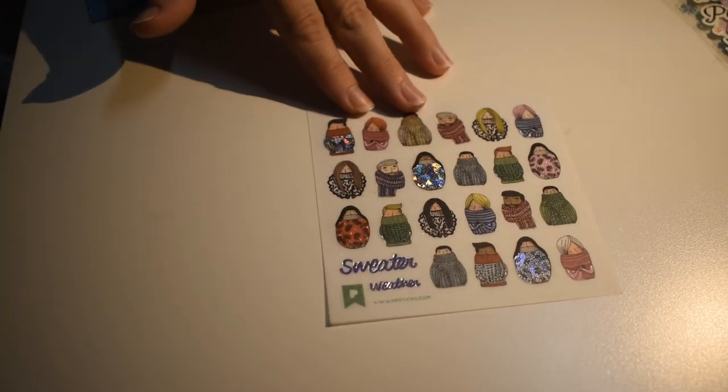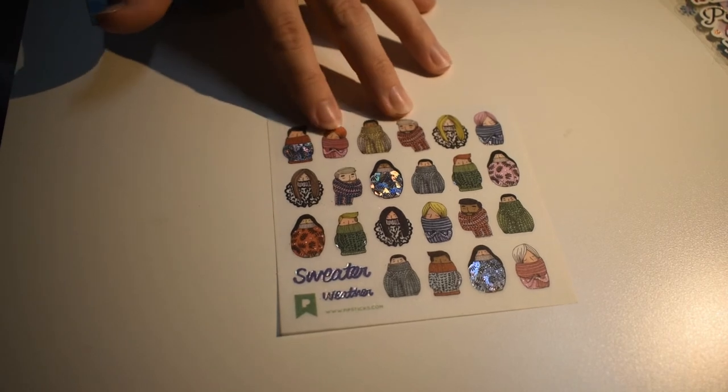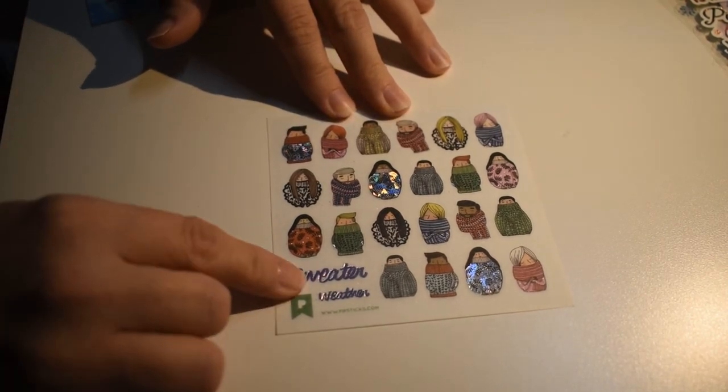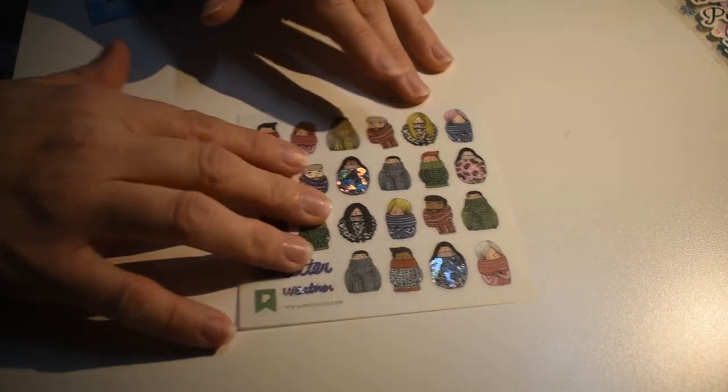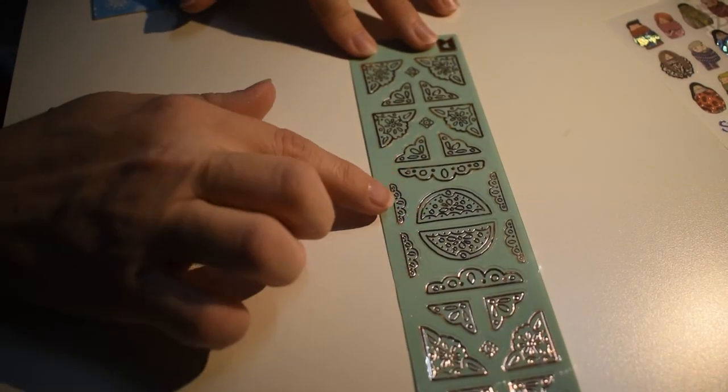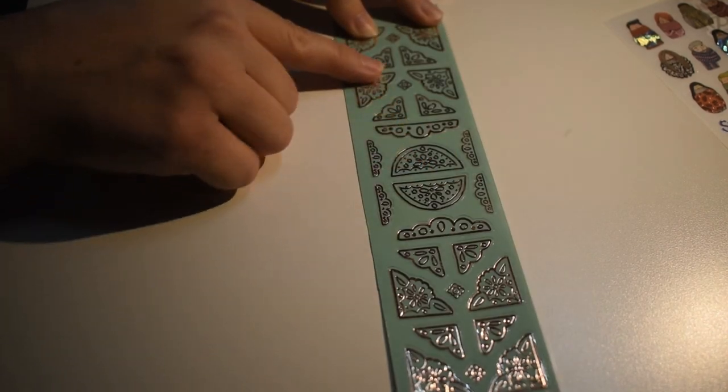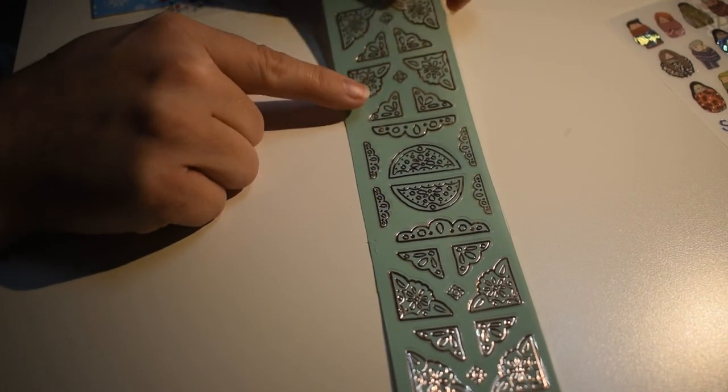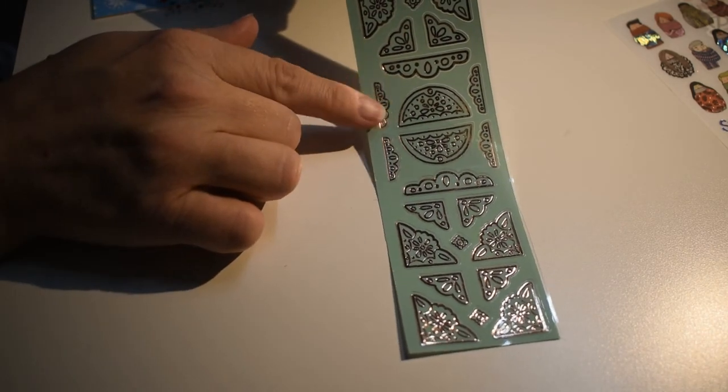Ah, look at these little... They kind of look like nesting dolls, but they're just little characters with sweaters. It says 'sweater weather.' All these little people with beautiful little sweaters on. Some are a little shiny. Here's some decorations for your photos. These also could be used on cards, on the corners and on the top of your cards if you're doing a nice decorative Christmas card. Very pretty. Very useful.